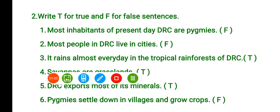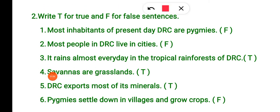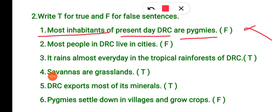Next exercise: true or false. Most inhabitants of present DRC are Pygmees — false. Today most inhabitants are not Pygmees. Most people in DRC live in cities — false. They live in villages and in the forest.